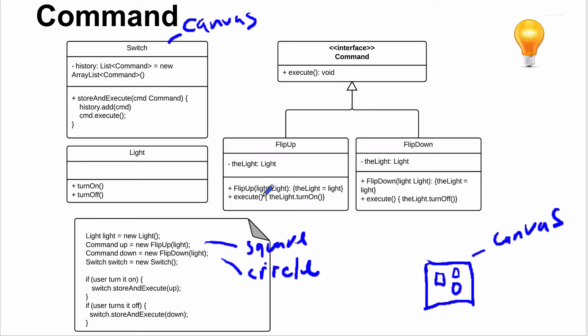Every command must implement the execute() method — that's the only method in the interface. It's a bit more code, but what you gain is a history. Every time you do something it goes through storeAndExecute(), so you get every command added to history. To add undo, you add an undo method to all your commands — different for every command, and impossible for some.